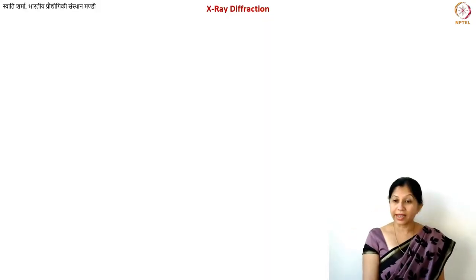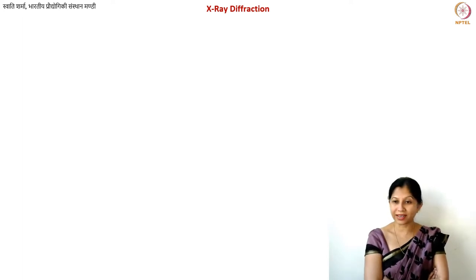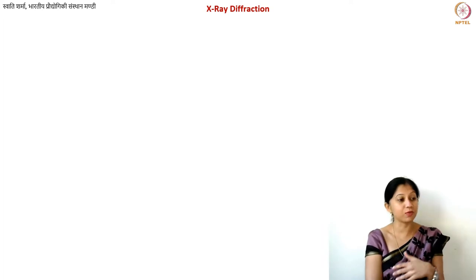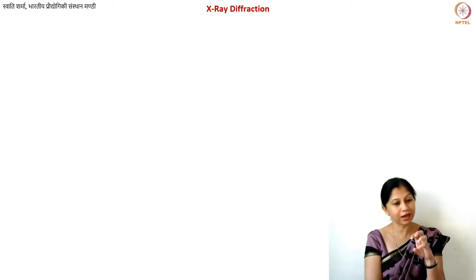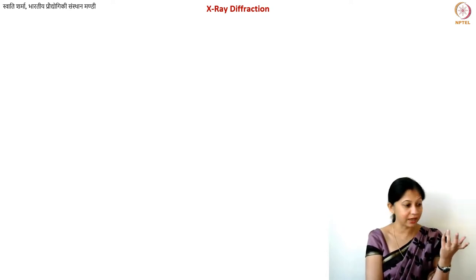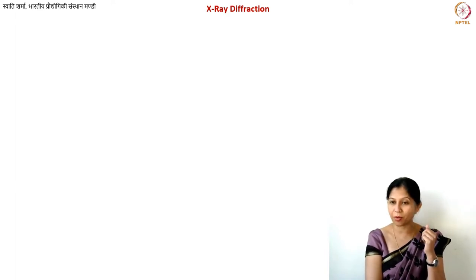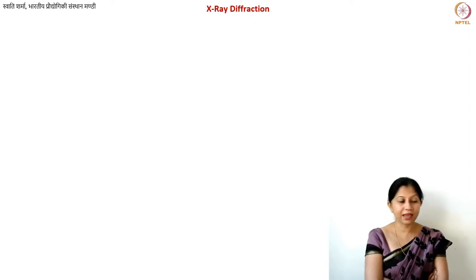Hello everyone. In the next couple of lectures we are going to discuss some characterization techniques. Characterization basically means we want to understand what is the microstructure of the material and accordingly what are the properties of the material. Sometimes we will measure a certain property to understand the microstructure, sometimes we will see the microstructure under an electron microscope and try to understand the properties. Often we will do both. Characterization techniques are the set of all techniques used for understanding a certain material.